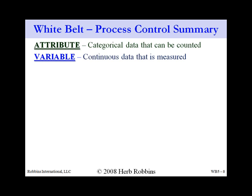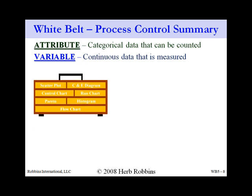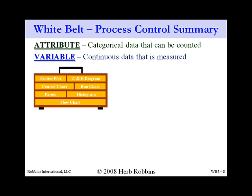Congratulations on completing this part of your white belt. Before you head off, let's briefly review what you've learned. Attributes and variables — two types of data: one we count and fits nicely into categories, the other we measure and is continuous. You'll see the 7 quality tools which will be added to your toolbox — terrific ways to analyze your data using visual representation.